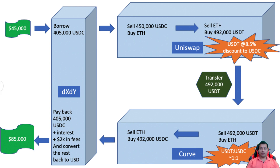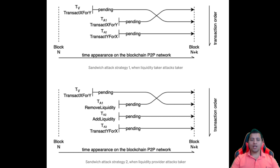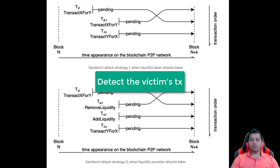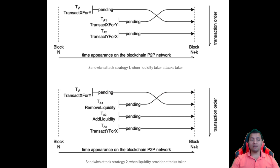Front-running is another one. Searchers basically use customized front-running bots to monitor the network for large orders on DEXs and submit competing transactions with higher gas fees to be mined before the pending transaction. Sandwich attacks follow a specific course: it detects the victim transaction, front-runs the victim's transaction, then the victim transacts and suffers higher slippage, and finally the attacker back-runs the victim.